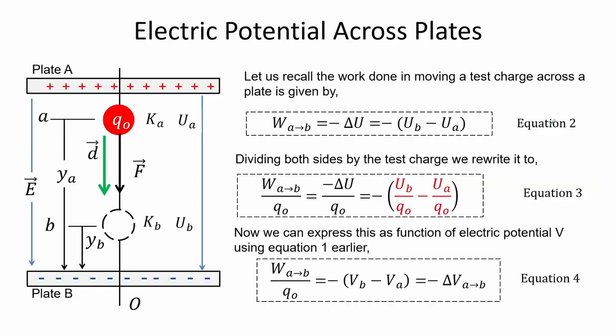Here we have charged parallel plates where a positive test charge moves across. We recall the work done in moving the test charge, given by equation 2, which is the negative of the change in electric potential energy. If we divide both sides by the test charge we get an expression identical to the formulation for the electric potential V. So we get the relationship: work done in pushing the test charge from A to B equals the negative change of the electric potential V.